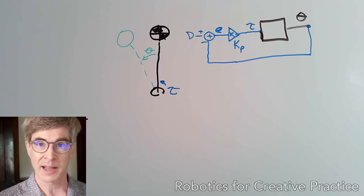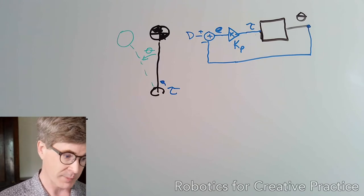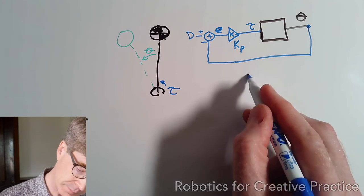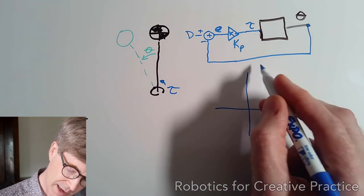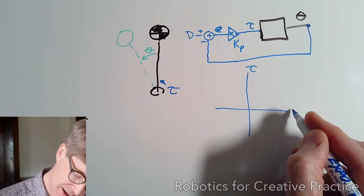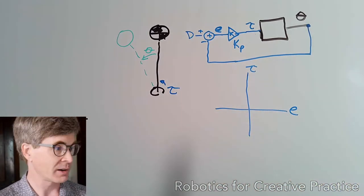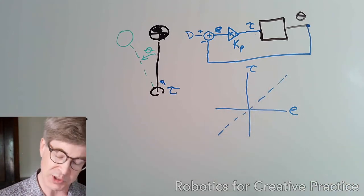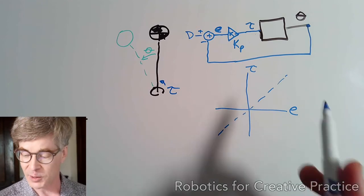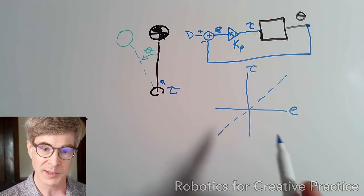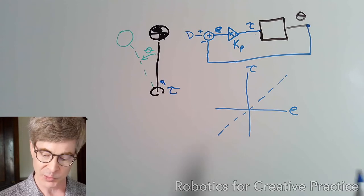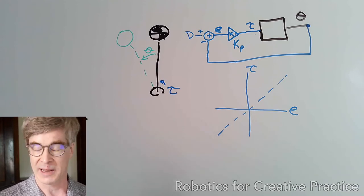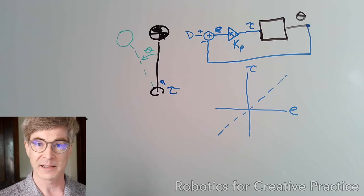So if we actually plot that out, let's think about tau as a function of the error. And it's a linear function. For positive or negative error, we have some proportionality that we're applying, so that very small errors, we apply small torques hovering right around the top, larger errors, we apply larger torques. And if you remember your physics, this is exactly the linear function for an idealized linear spring.